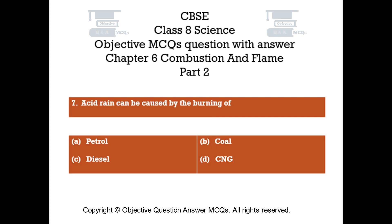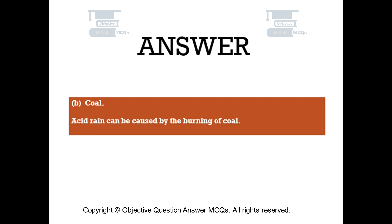Question number 7. Acid rain can be caused by the burning of: Option A, petrol. Option B, coal. Option C, diesel. Option D, CNG. The right answer is Option B. Acid rain can be caused by the burning of coal.